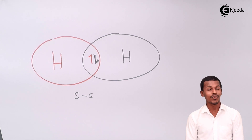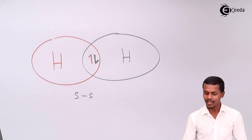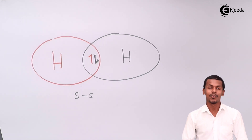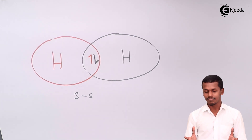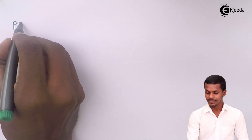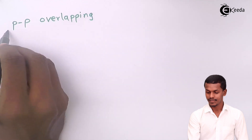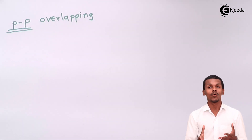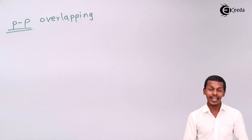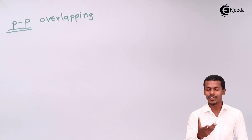This was an example of SS overlapping. It is not necessary that only hydrogen forms SS overlapping — there are several molecules capable of forming a single bond between two atoms this way. Now let us talk about PP overlapping. PP overlapping is the overlapping of two p orbitals of different atoms, and they combine to form a single covalent bond.